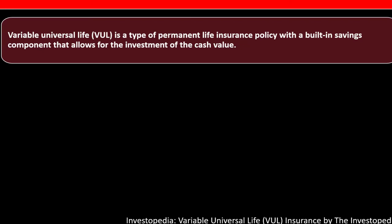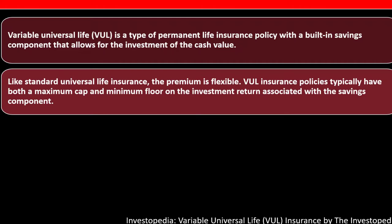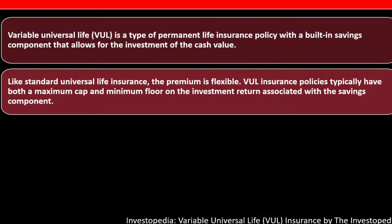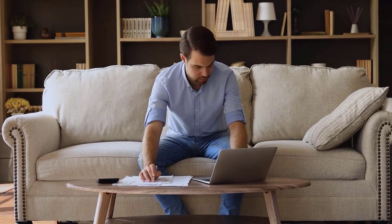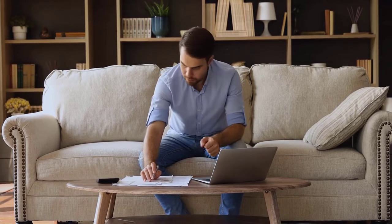Variable Universal Life (VUL) is a type of permanent life insurance policy — as opposed to a term policy — with a built-in savings component that allows for the investment of the cash value. Like standard universal life insurance, the premium is flexible. VUL insurance policies typically have both a maximum cap and a minimum floor on the investment return associated with the savings component.